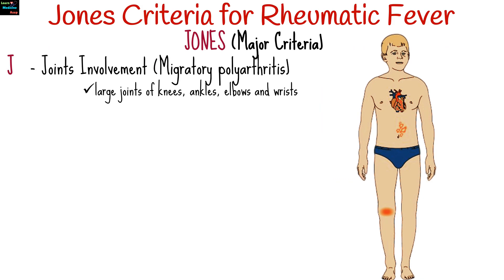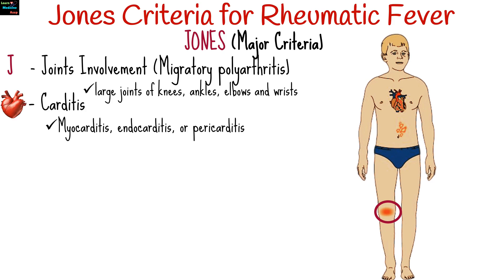J is for joints involvement. Migratory polyarthritis is typically seen, meaning the arthritis moves from one joint to another. Most commonly affected joints are the large joints of the knees, ankles, elbows, and wrists, all represented by the heart shape for easy remembrance.